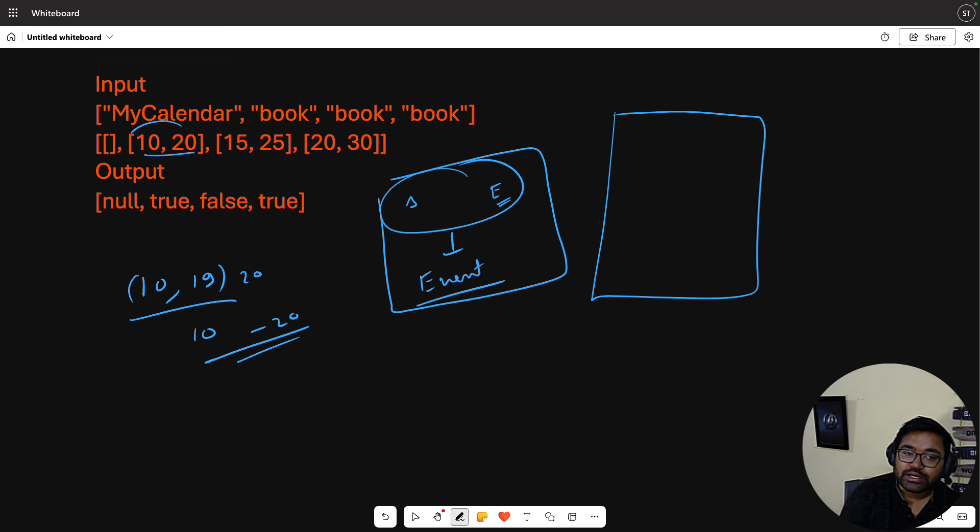So here I will create 10 and this is 20, where 20 is exclusive and not included. Your event is actually 10 to 19. Next we have 15 and 25. Now at 15 you will have something like this, which is an overlapping part. So what do we do? We don't store this. When you have 10,20 and the list is empty, you return true.